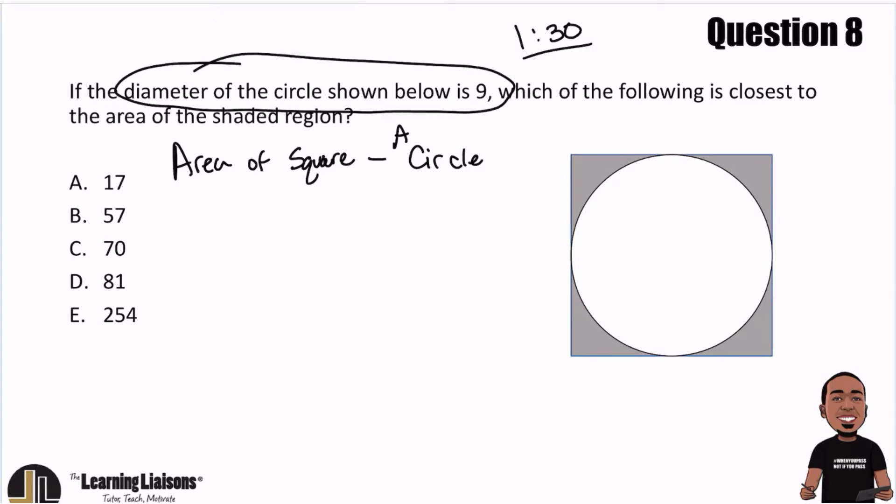We're going to use that to our advantage because the diameter is the distance across the circle, and that's going to be 9.